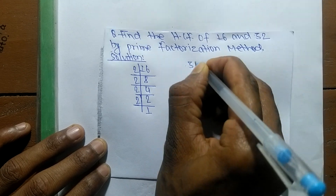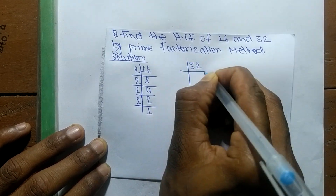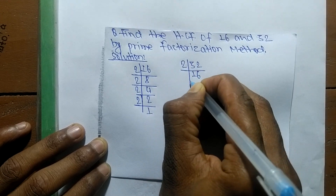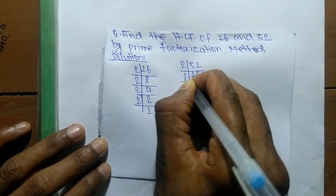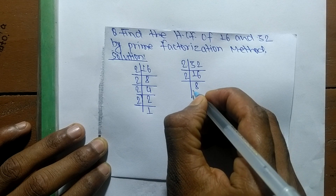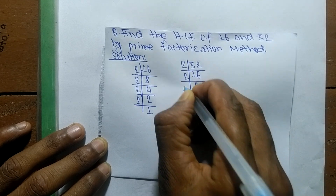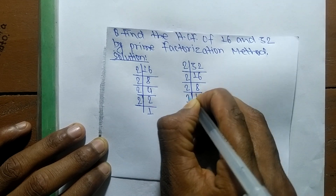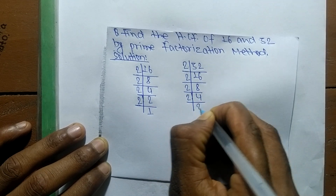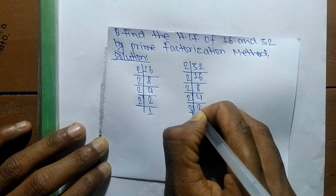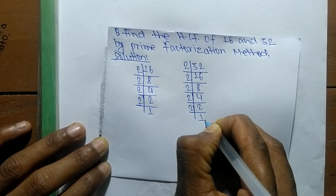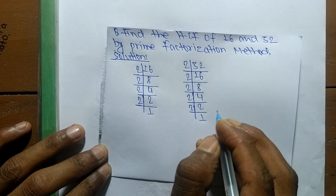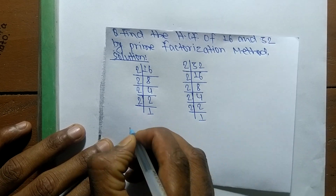The prime factors of 32 are: 2 times 16 equals 32, 2 times 8 equals 16, 2 times 4 equals 8, 2 times 2 equals 4, and 2 times 1 equals 2.